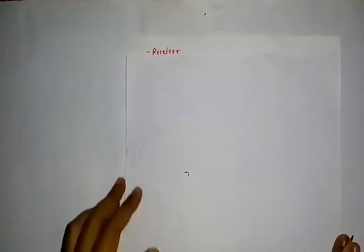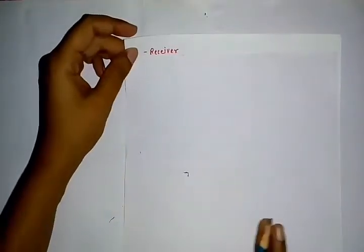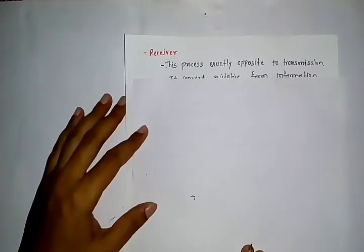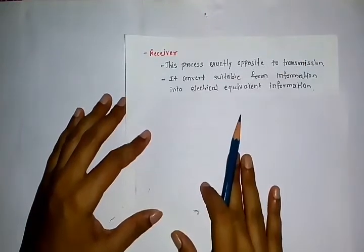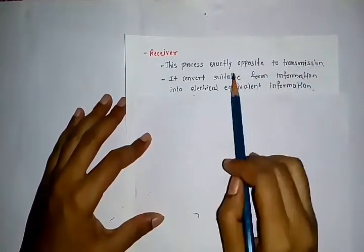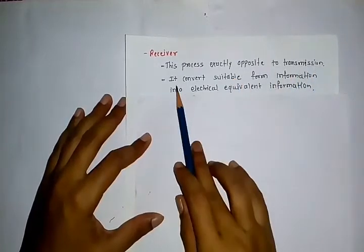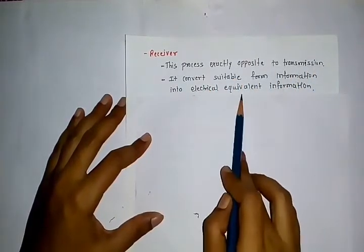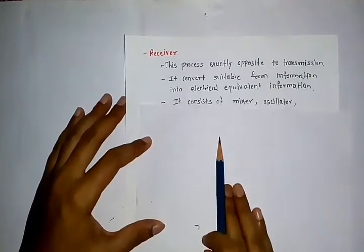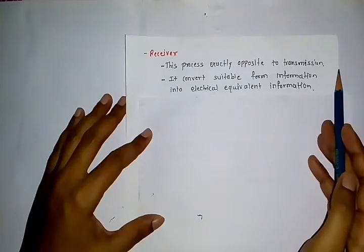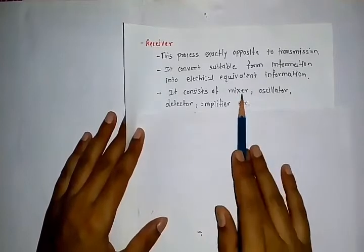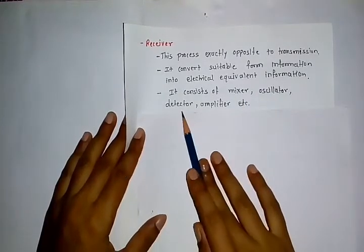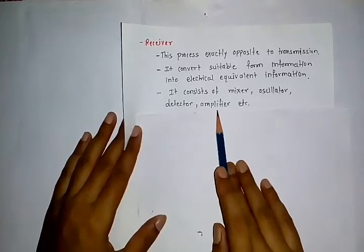The next block is the receiver. The receiver process is exactly opposite to the transmitter — it converts the suitable form information into electrical equivalent information. The receiver consists of a mixer, oscillator, detector, and amplifier.